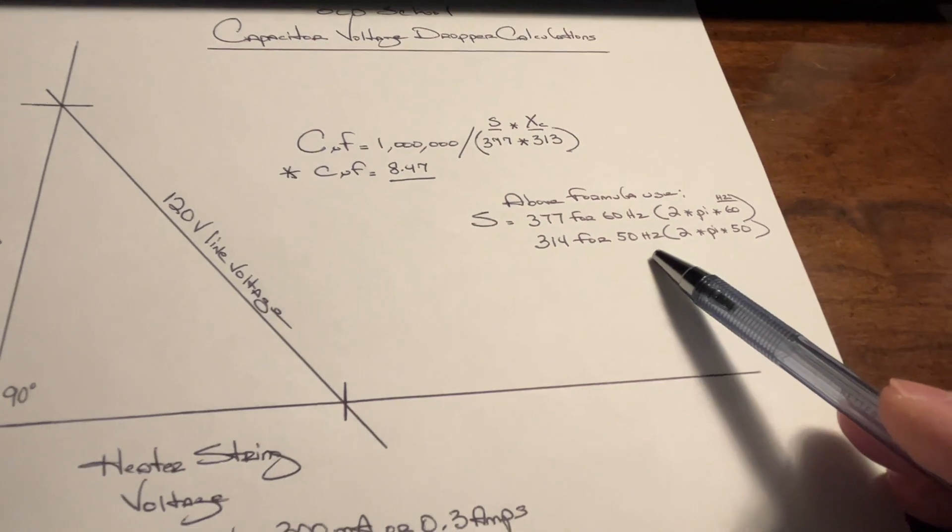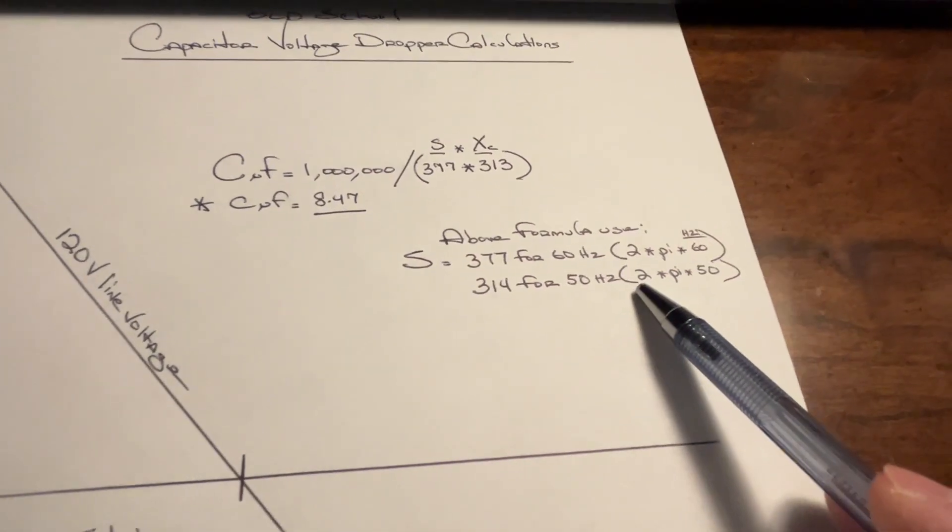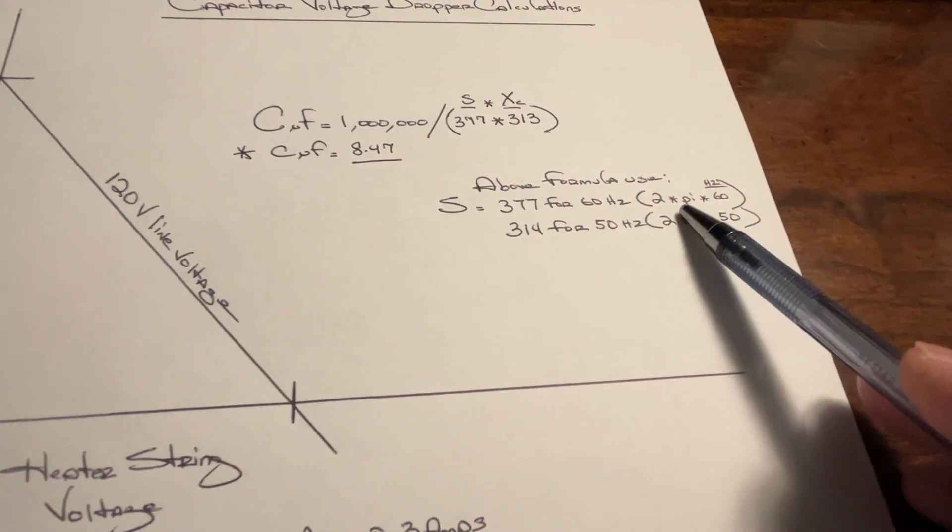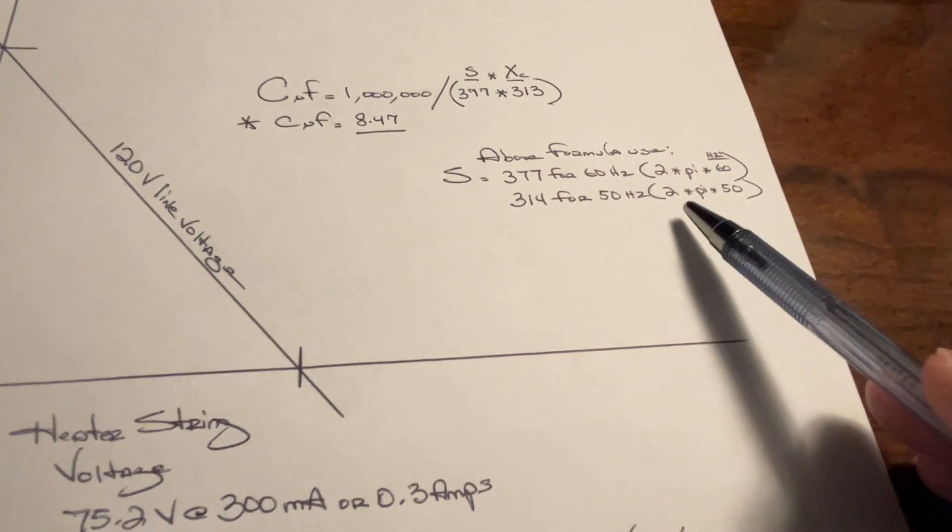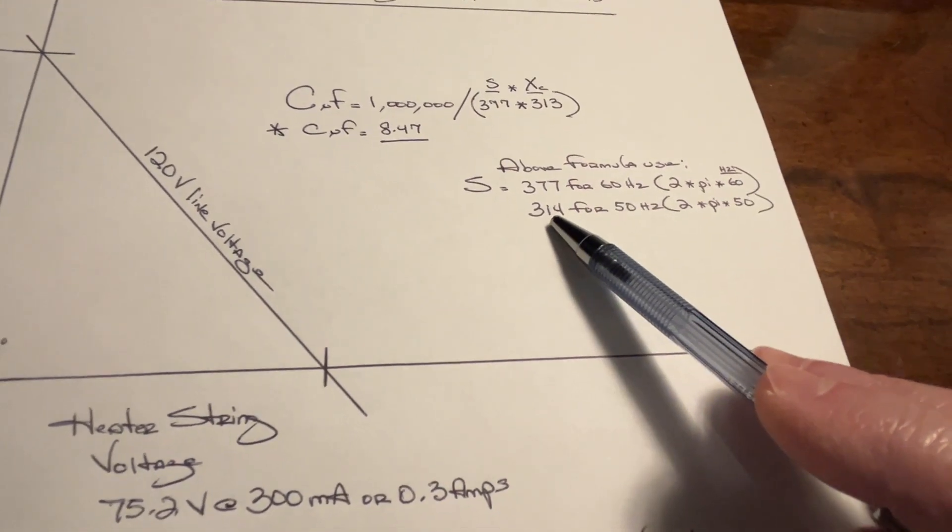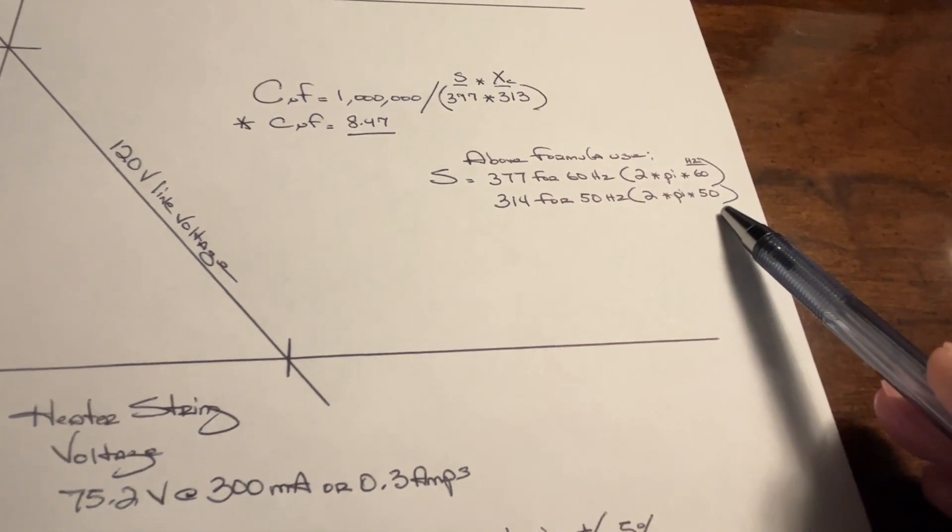I mentioned that number was static, the 377. That's nothing more than 2 times pi times 60 hertz. And if I were in a 50 hertz power grid, I would substitute 314, 2 times pi times 50 hertz.